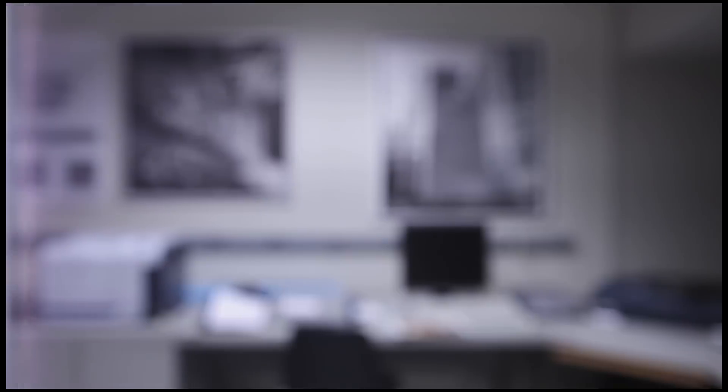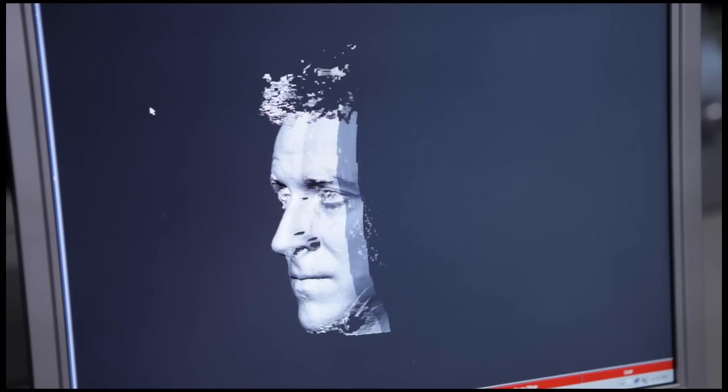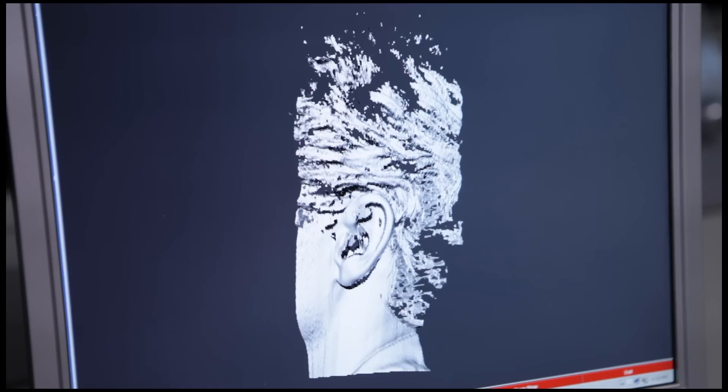The process starts with a scan of an ear. We sit someone down in a chair, and we have a camera that spins around their head and takes a 3D image of their head. Then we can very precisely map out the topology of the ear.